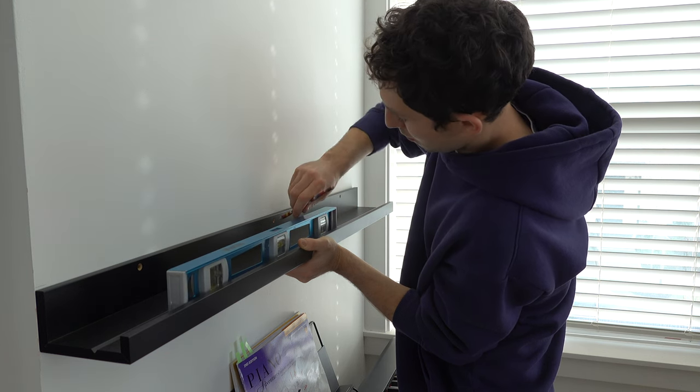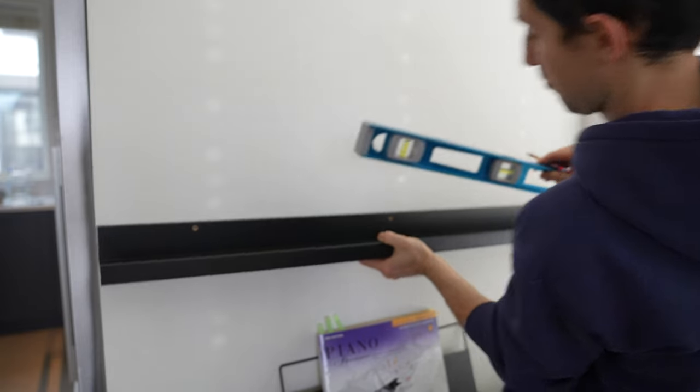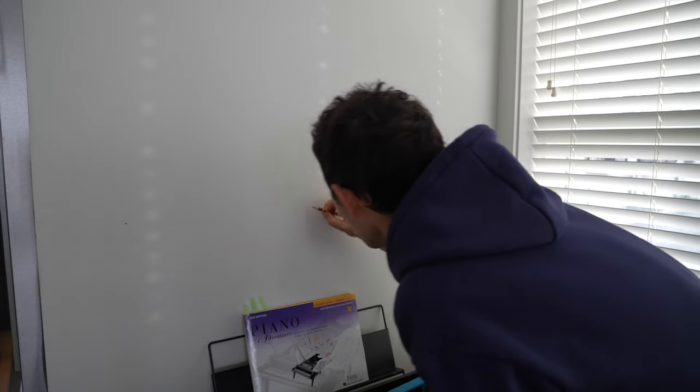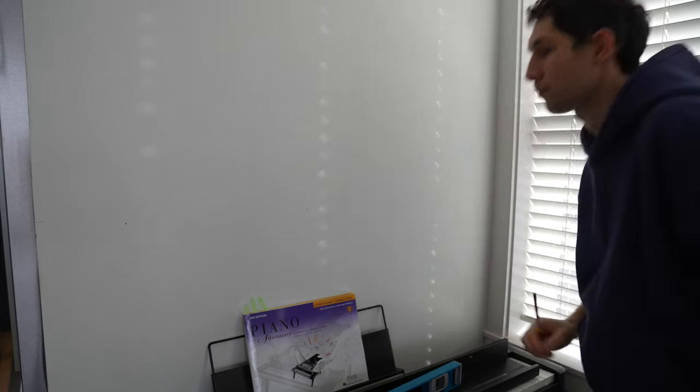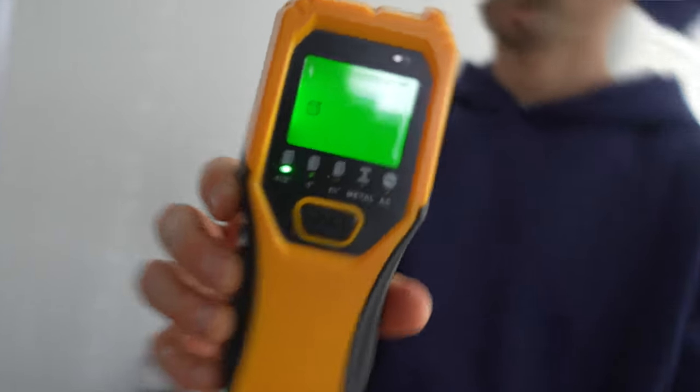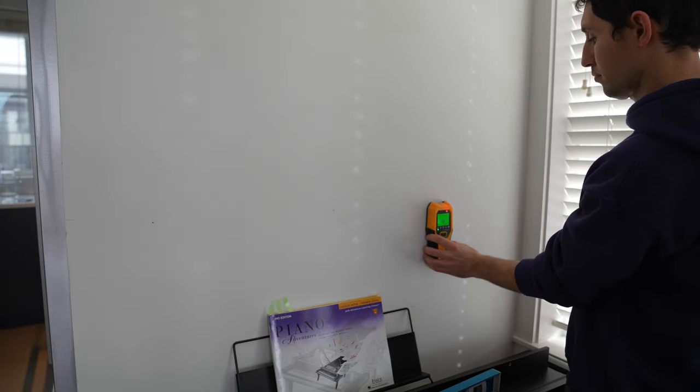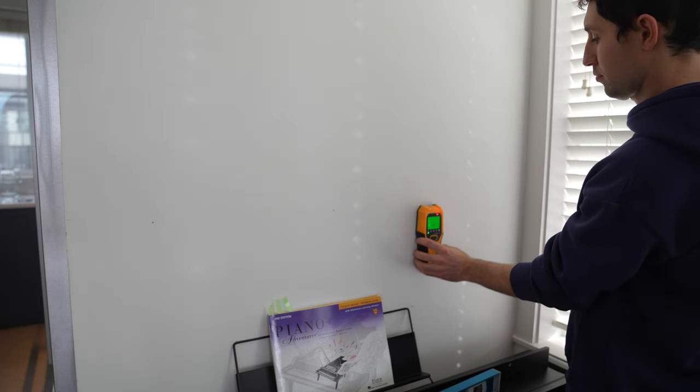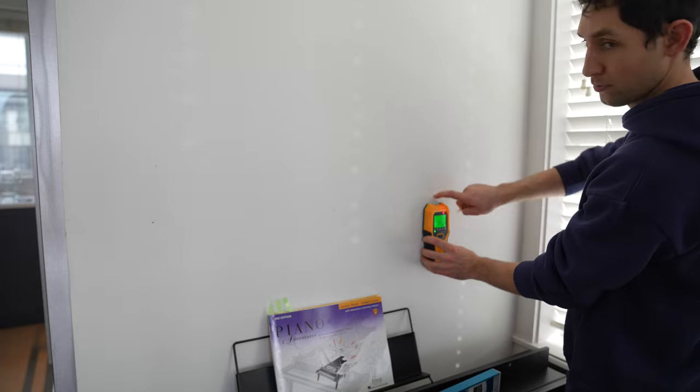It is always better to put screws into studs. However, it's not always possible. In my case, there is a specific place on the wall where I want the shelf to hang, so I will adapt. If you have a stud finder, check all the marks on the wall for a stud behind the wall. Unfortunately, my stud finder detected some electric wiring behind the wall, so I will be extremely cautious.